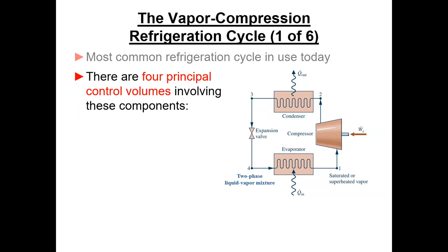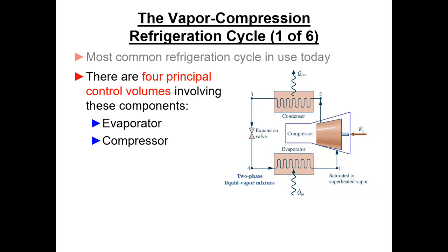The evaporator is where the cooling effect occurs. If this is an air conditioning system in your house, return room air is blown across a coil that has cold refrigerant in it. As heat transfers from the warm air to the refrigerant, the refrigerant boils off. It's mostly a cold liquid when it enters the evaporator, and we complete the phase change as refrigerant flows through the coil.